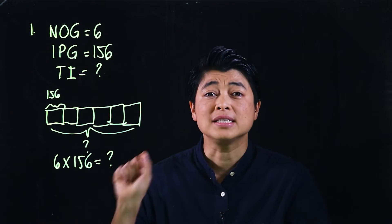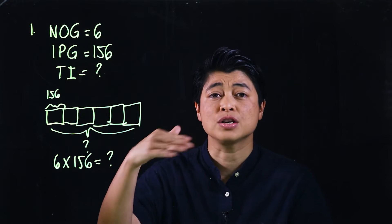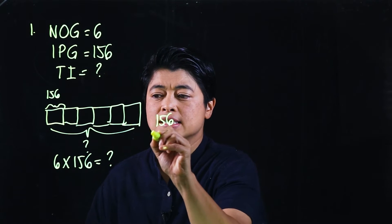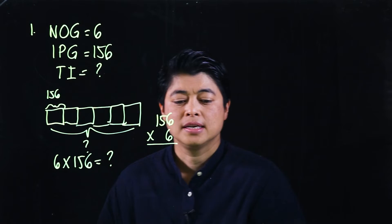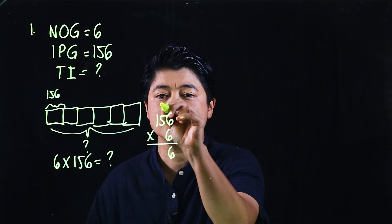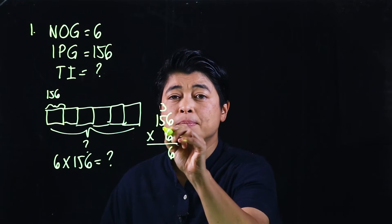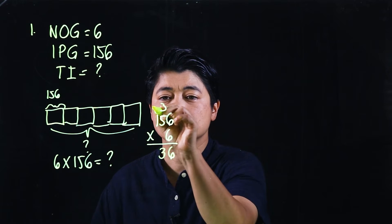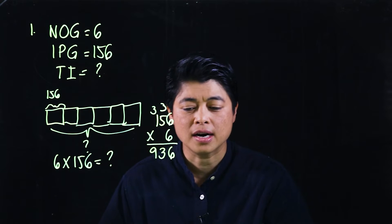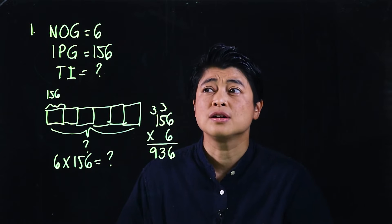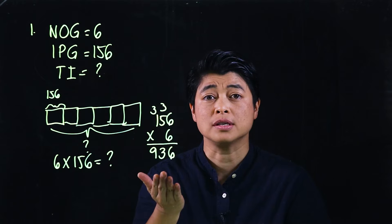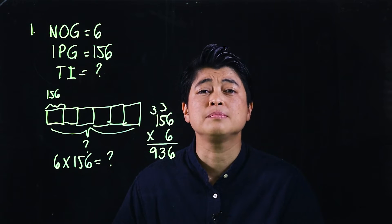The equation for this problem is 6 × 156 = ?. For consistency, we write the larger number on top: 156 × 6. Multiplying: 6 × 6 = 36, carry the 3; 6 × 5 = 30 + 3 = 33, carry the 3; 6 × 1 = 6 + 3 = 9. So there are 936 total pens.